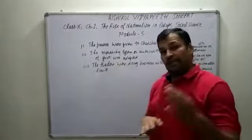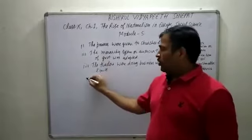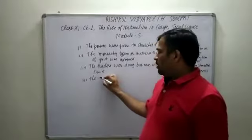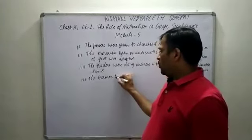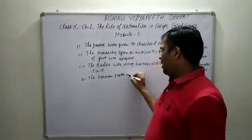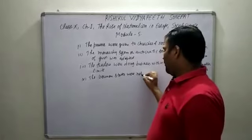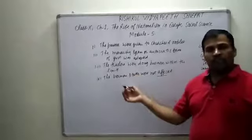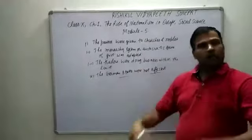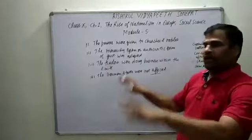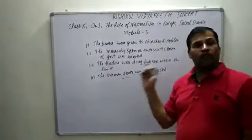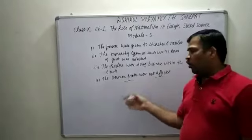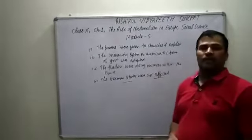After Napoleon's defeat, the German states were not affected by the conservative changes in the same way — the policies adopted in the German states were running as they were. The conservatives did not interfere in those matters. But the other changes or amendments that Napoleon had made were reversed.